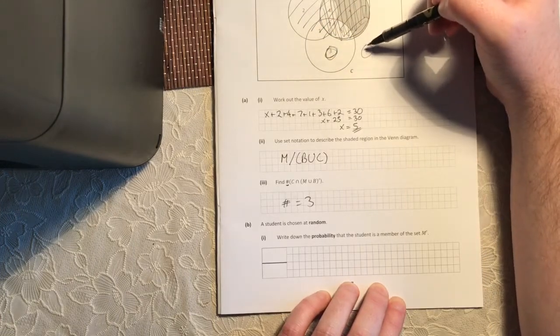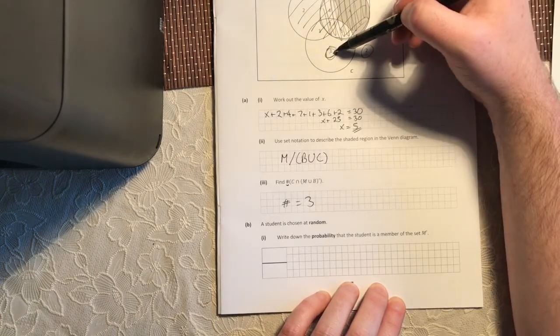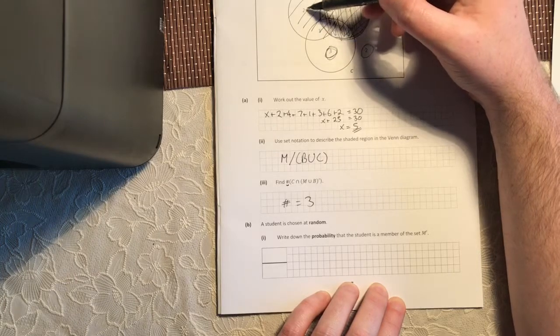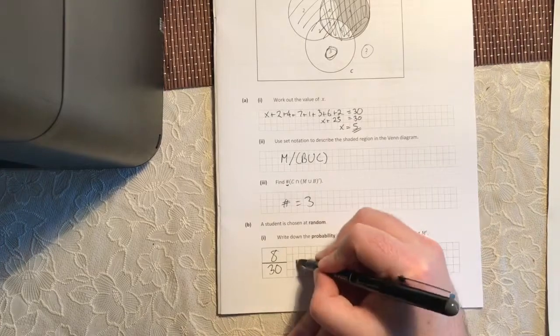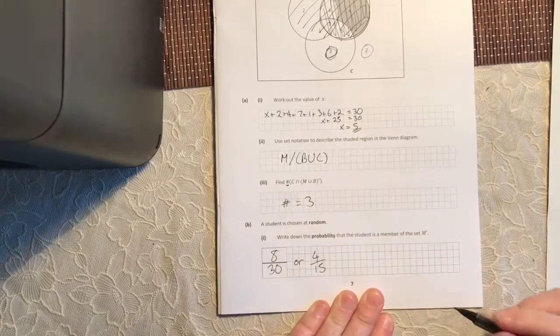So this 2, this 1, this 3, and this 2. So how many students is that? 2 plus 3 is 5, plus 1 is 6, plus 2 is 8 out of 30. You can simplify that down to 4 out of 15.